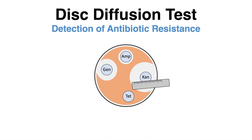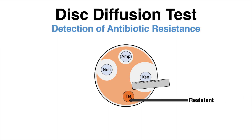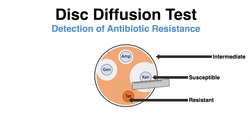If the bacterial lawn around one disc is not affected, the bacteria is likely resistant to this specific drug. The other discs indicate antibiotic vulnerabilities, intermediate responses indicating low susceptibility, or emerging antibiotic resistance.